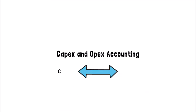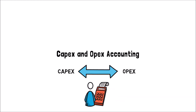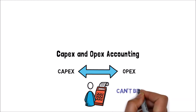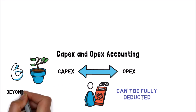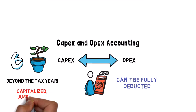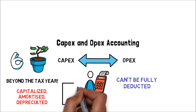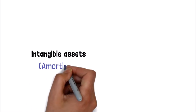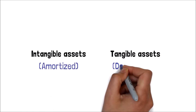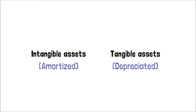A major distinction between these two types of expenses is how they are accounted for on your income statement. CAPEX costs can't be fully deducted in the year they are incurred, because CAPEX involves purchasing assets that have a useful life beyond the tax year. Instead, they are capitalized and either amortized or depreciated over the asset's lifespan — intangible assets such as know-how are amortized, whereas tangible assets are depreciated according to the useful life of each item.